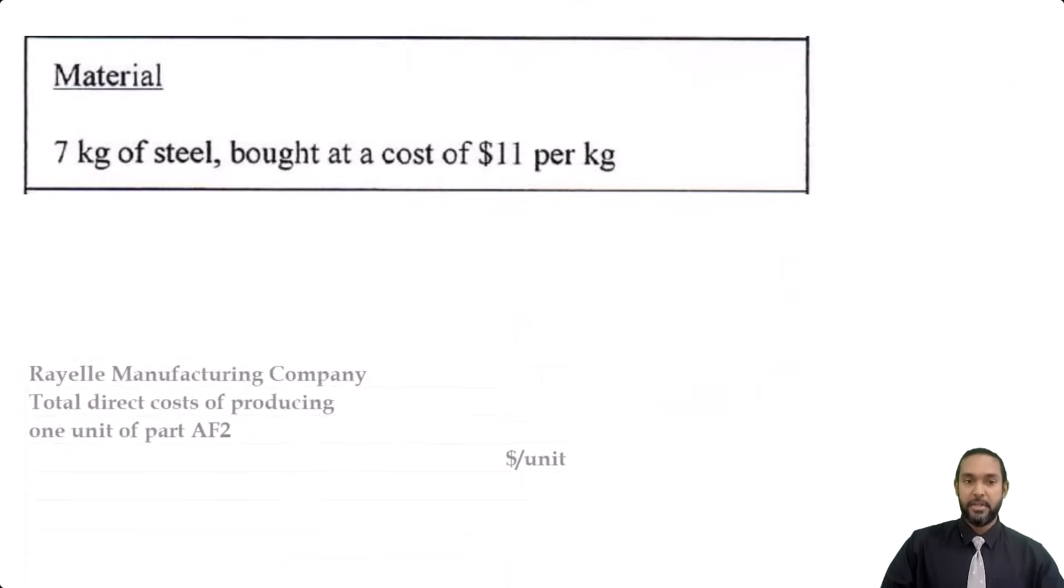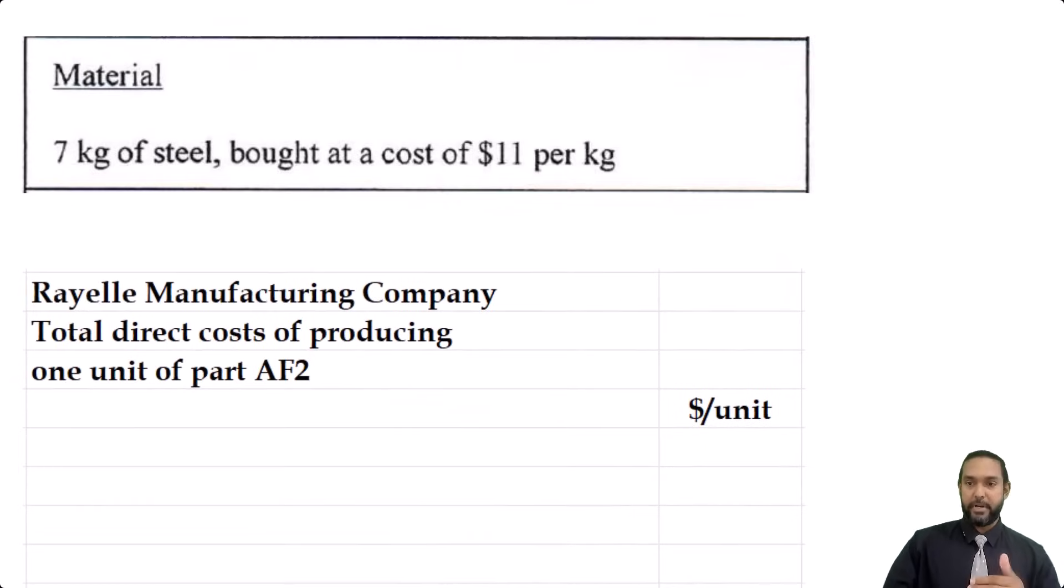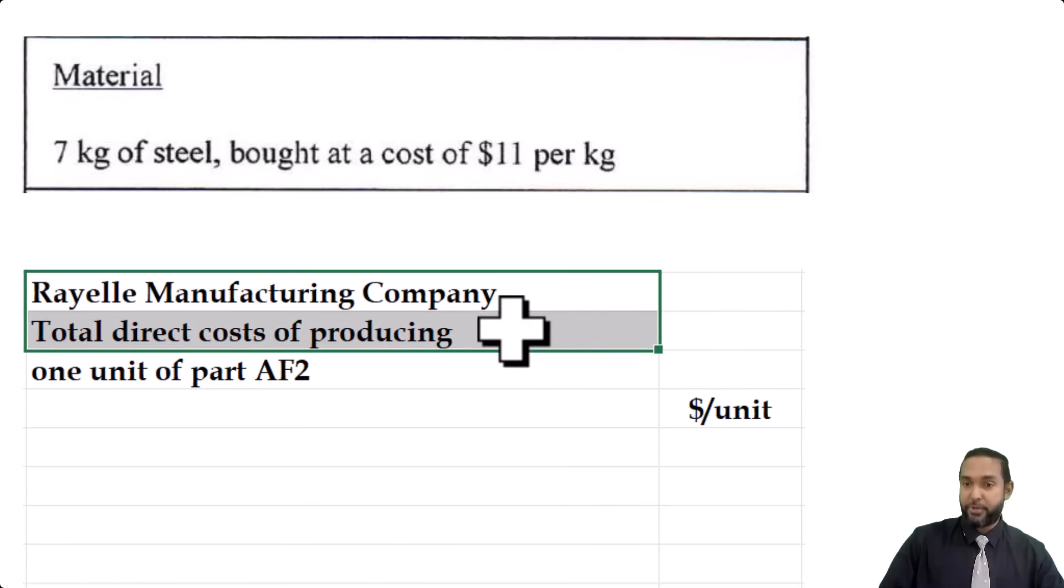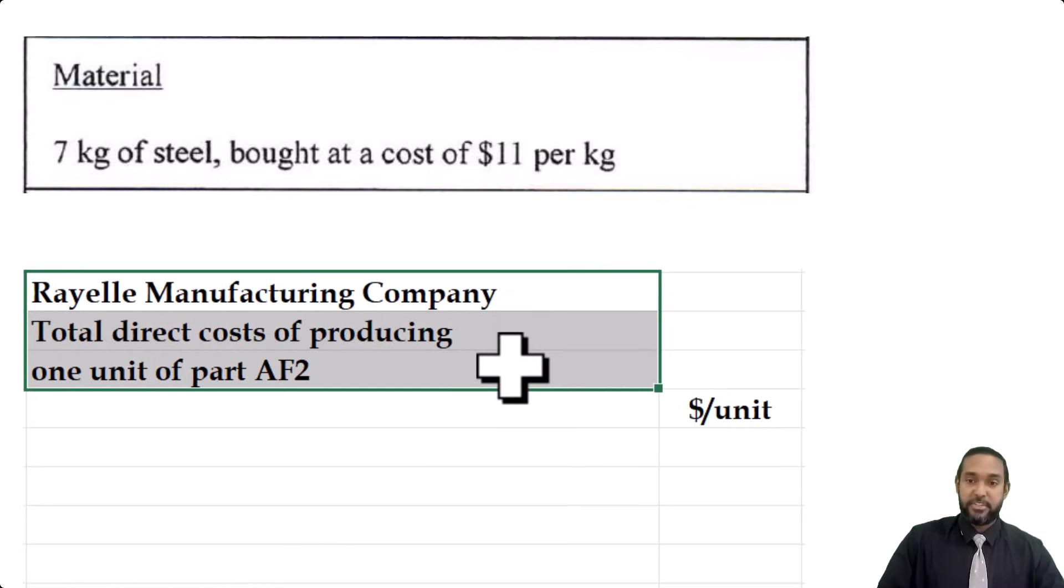Okay, so this is some simple maths. I like to put my solutions for even for things like this in a kind of statement form. That's just how I was trained. You don't have to. You can put it in simple mathematical statements if you want. So as you'll see, I've headed up Rael Manufacturing Company, total direct costs of producing one unit of part AF2.